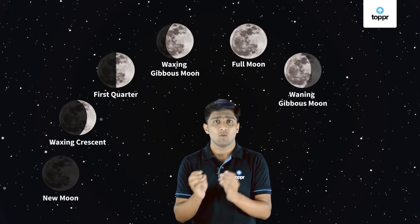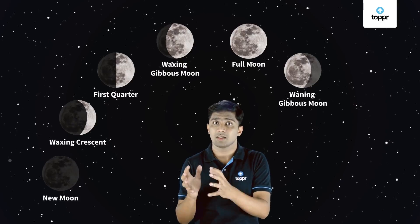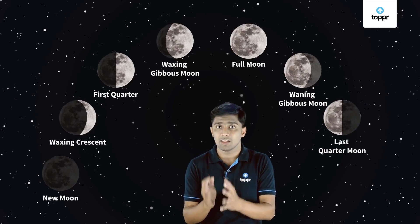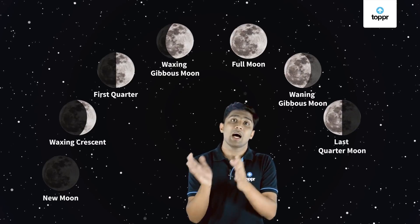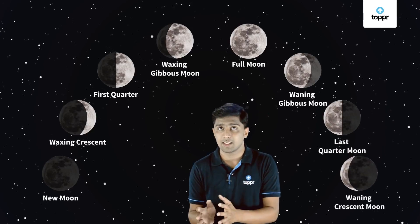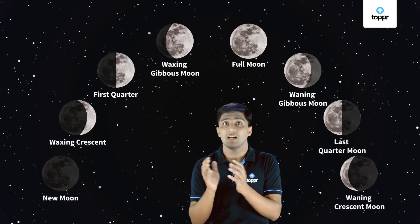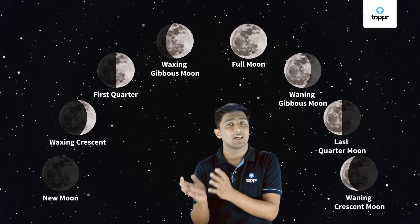Phase 5 is the full moon — beautiful and poetic. Phase 6 is the waning gibbous moon. Waning means the moon starts decreasing. In this phase, the moon starts decreasing its shape. Phase 7 is the last quarter. In this phase, the moon appears half lit again. Phase 8 is the waning crescent. This is the last phase before the next new moon.